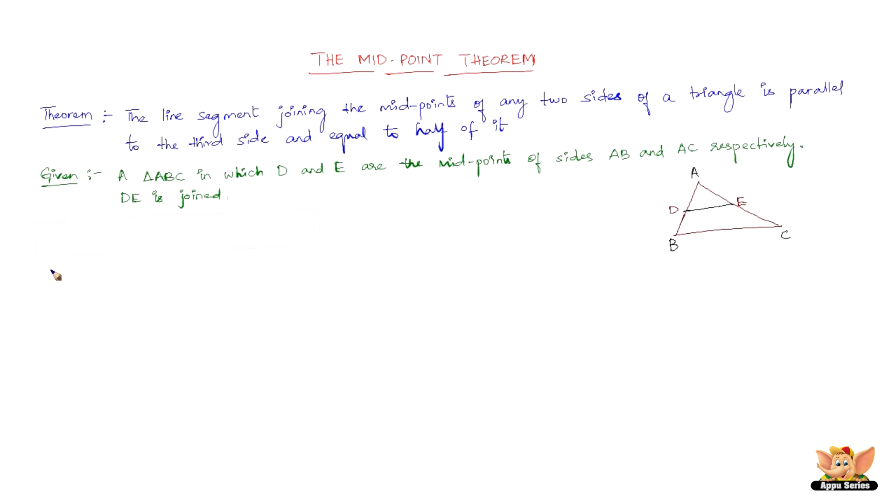Now in order to prove, we need to do a small construction. We need to produce the line segment DE such that DE becomes equal to EF. You need to produce it to F such that the length of DE is equal to the length of EF. So this point is F and then we need to join FC.